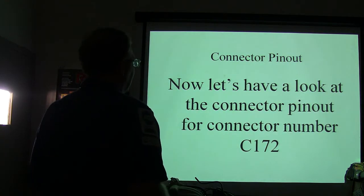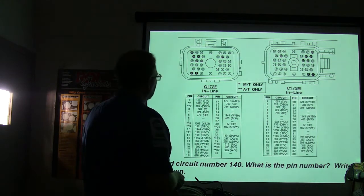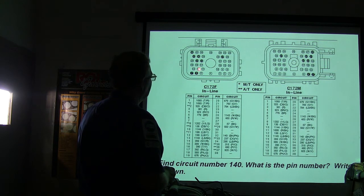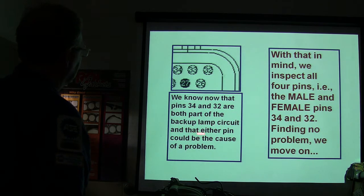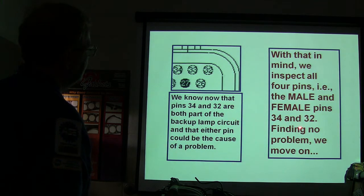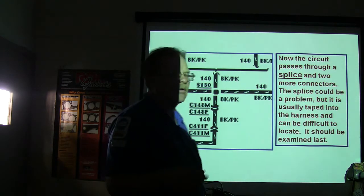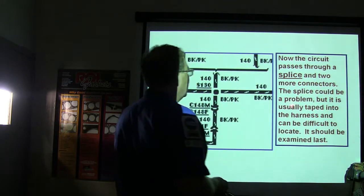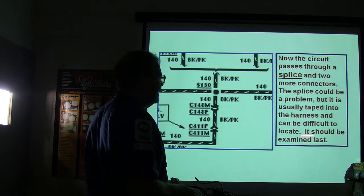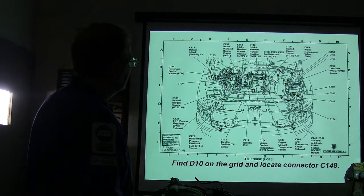We know that pins 34 and 12 in connector C-172 are both part of the backup light circuit, and either pin could be the cause of the problem. The circuit passes through a splice and two more connectors. Always go to the easiest connector first — if one is buried under the dash and one is on top of the engine, go to the one on top of the engine first. The splice is usually taped into the harness and can be difficult to locate, so that's the last place you want to go. Connector C-148 is the next one.